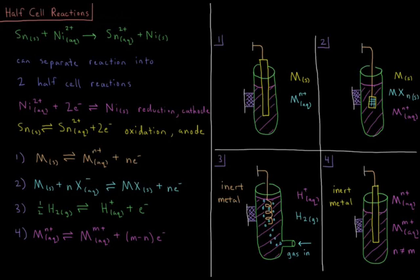This video will discuss half-cell reactions in electrochemistry. From the previous video, our prototypical example of an electrochemical reaction is where we have solid tin atoms plus nickel ions in the aqueous solution, 2+ cations, going to tin 2+ cations in aqueous solution plus nickel metal solid atoms.